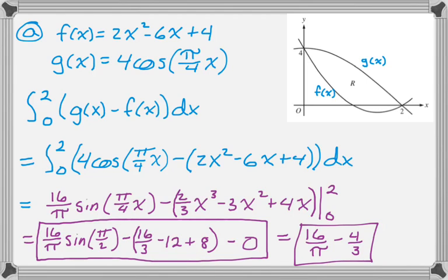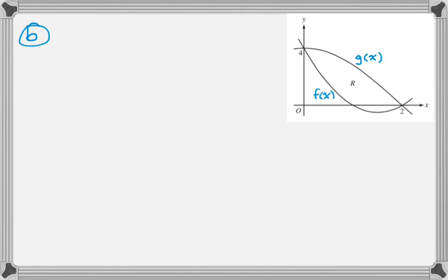Parts B and C aren't nearly so bad because they are setup but do not evaluate problems. We're told we're going to rotate this region around y = 4. I'm going to dot in y = 4.